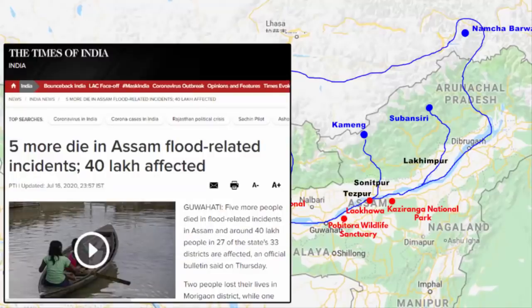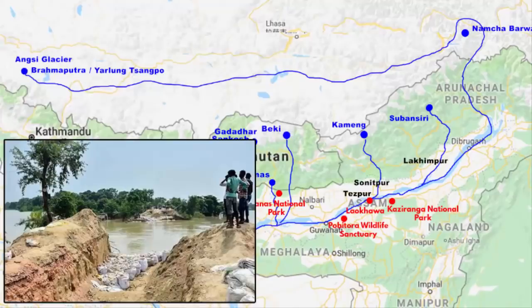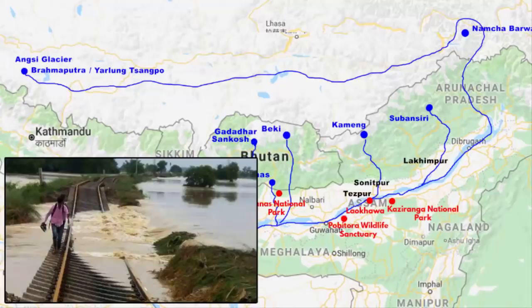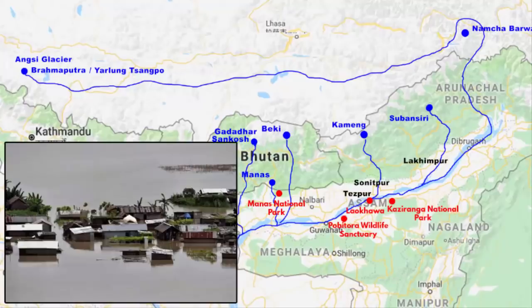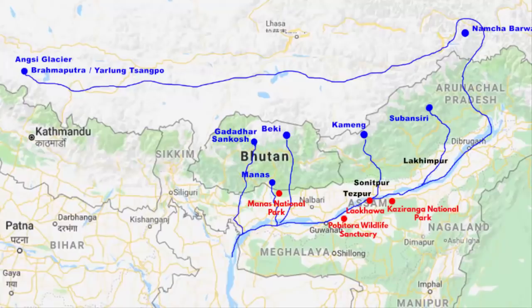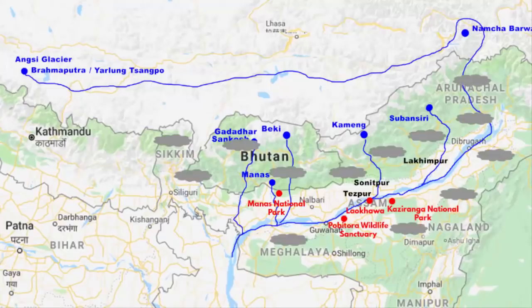Besides erosion of river banks, a large number of people have been displaced and affected. Roads, embankments, bridges, crops, and other infrastructure have been damaged at many locations in the flood-affected districts. I hope you understood the geographic terrain of Assam and how excess monsoon rain triggers flood and destruction year after year.